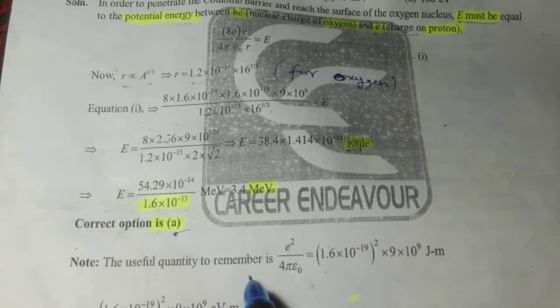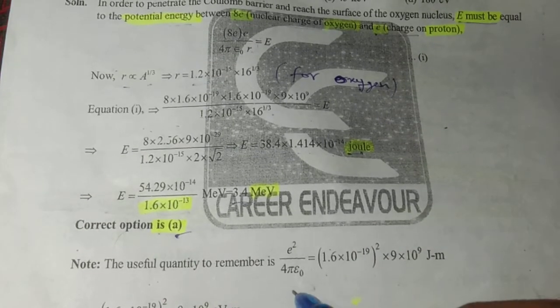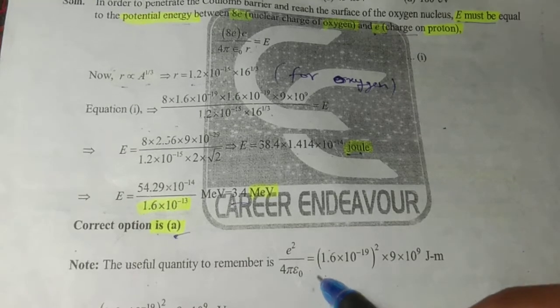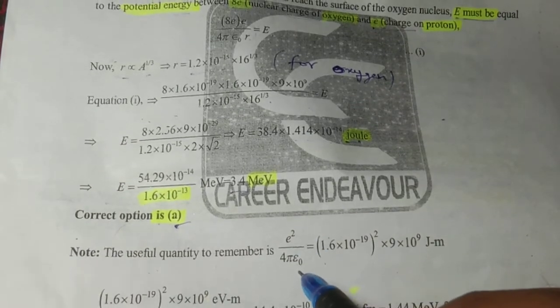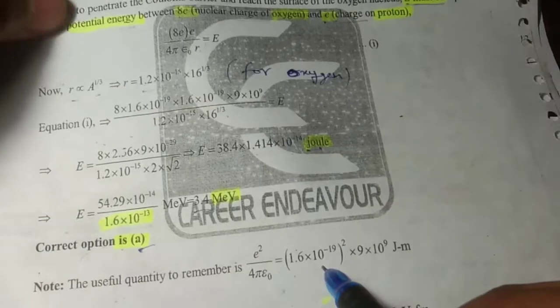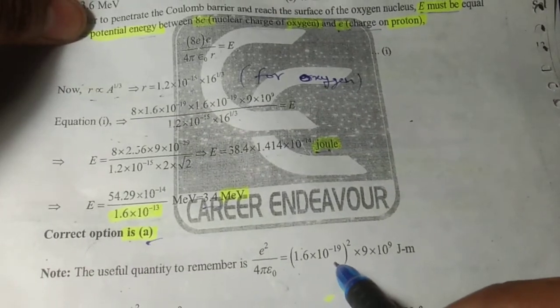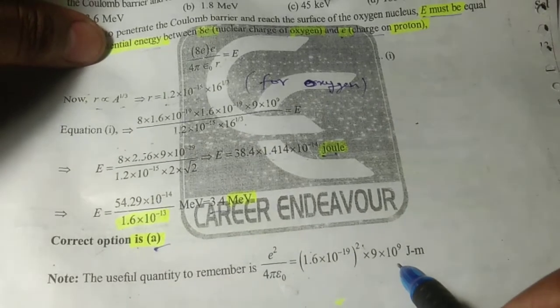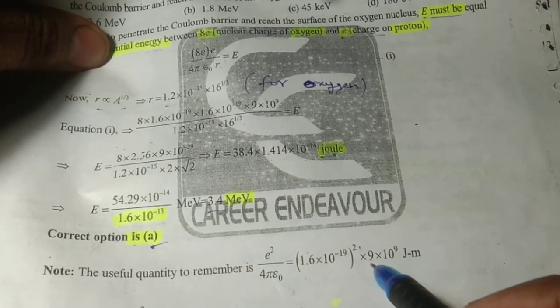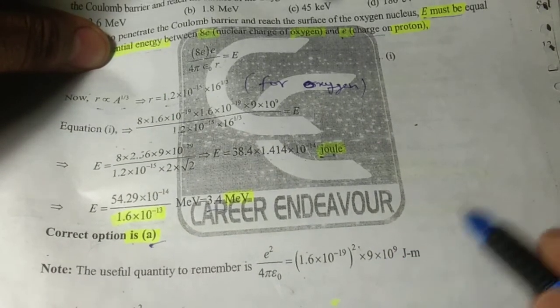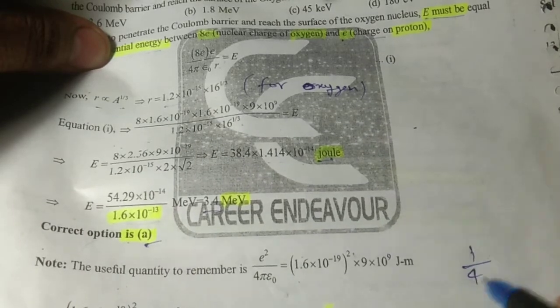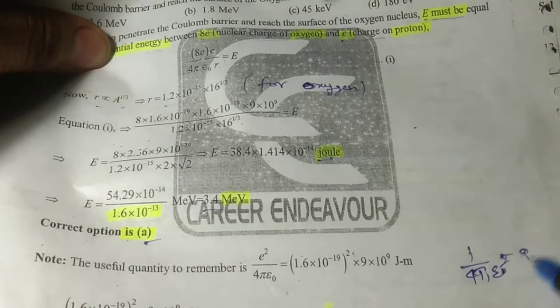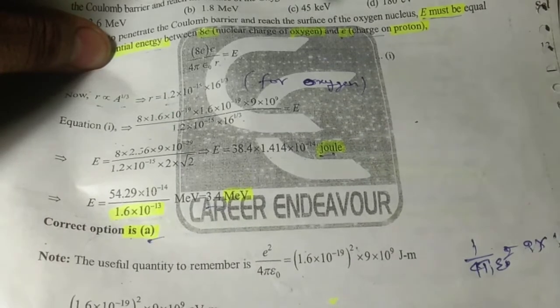A useful quantity to remember that will make calculations much easier is e² / (4πε₀), where e = 1.6 × 10^(-19). This equals 1.6 × 10^(-19) squared times 9 × 10^9, where 1/(4πε₀) = 9 × 10^9.